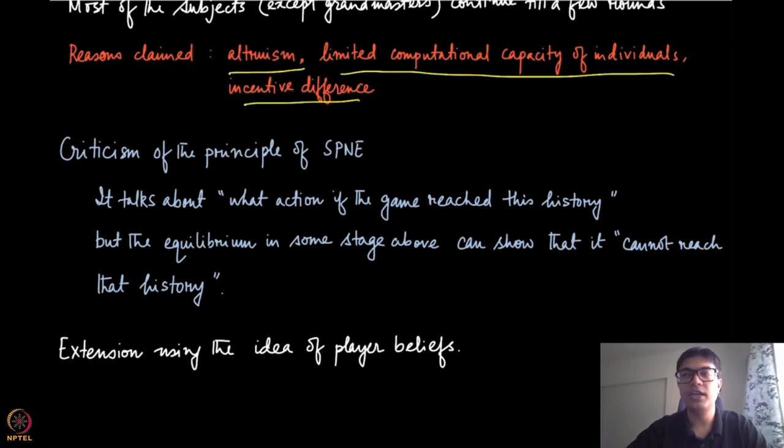But there are certain games, and we have discussed this earlier, games like cards where you cannot really observe the whole current state of the game. Certain part of that game is certainly visible, but certain parts are not visible. So in that case, the players use certain kinds of beliefs, and that is what we are going to use for this extension of this idea of SPNE.